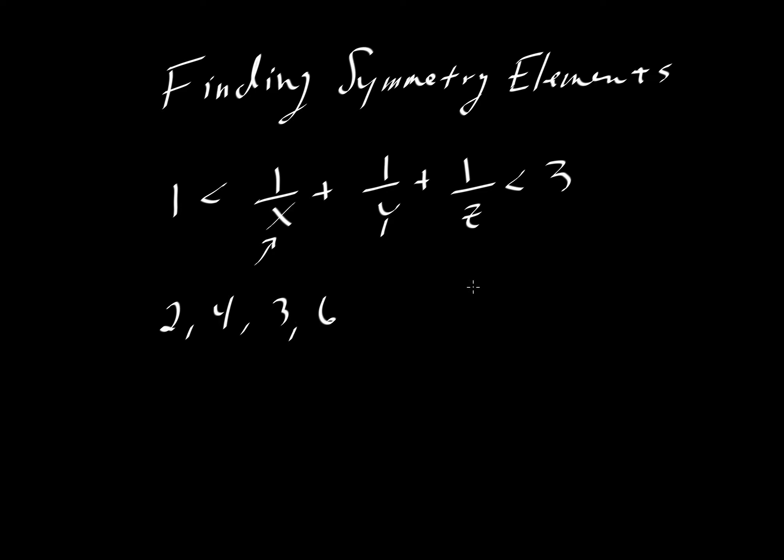For example, we cannot have the combination 6, 6, 2, because if we take the sum 1 over 6 plus 1 over 6 plus 1 over 2, that would be less than 1, and so it would not satisfy this inequality. That comes out of Euler's theorems of spherical geometry.